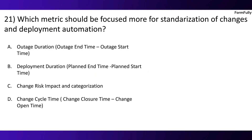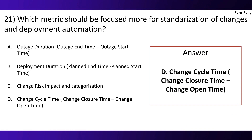Question 21. Which metric should be focused more for standardization of changes and deployment automation? Option A: Outage duration (outage end time minus outage start time). Option B: Deployment duration (planned end time minus planned start time). Option C: Change risk impact and categorization. Option D: Change cycle time (change closure time minus change open time). The correct option is D, Change cycle time.